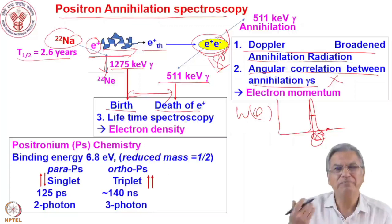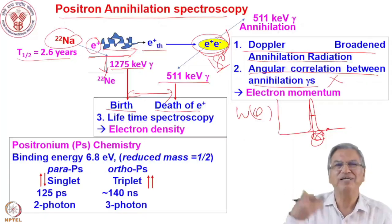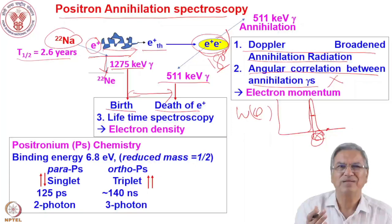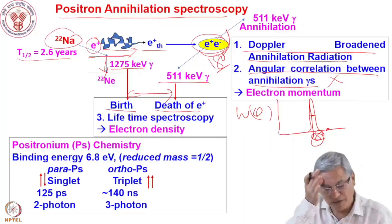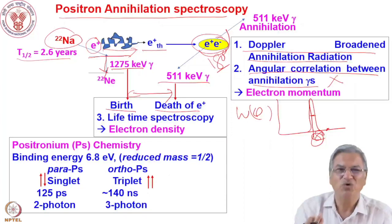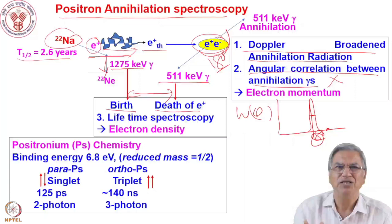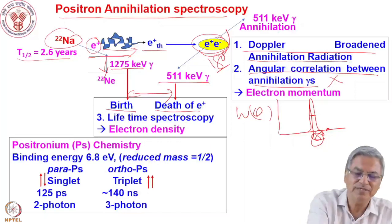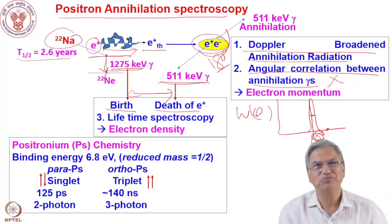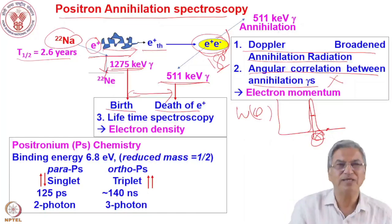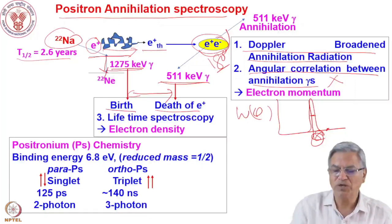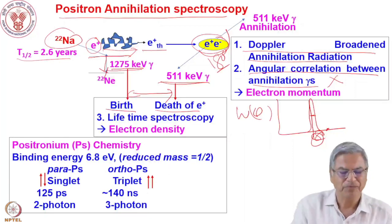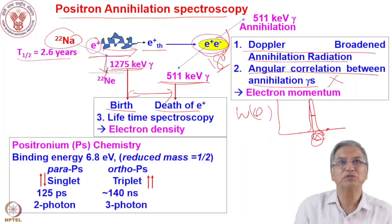Depending upon the chemical environment in which the positron is annihilating with an electron, this lifetime can change. The lifetime essentially tells you about the electron density in the medium where the positron is annihilating. The time between the 1275 keV and 511 keV gamma rays gives the lifetime. So these are three experimental techniques: Doppler broadening of annihilation radiation, angular correlation between gamma rays, and lifetime spectroscopy — all used in positron annihilation spectroscopy.